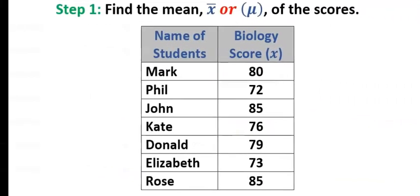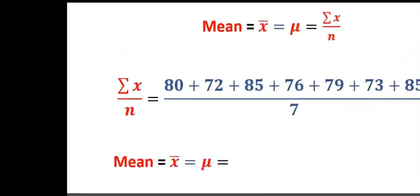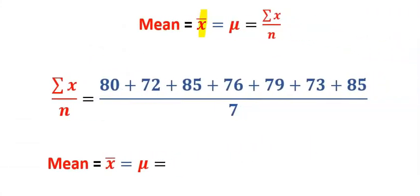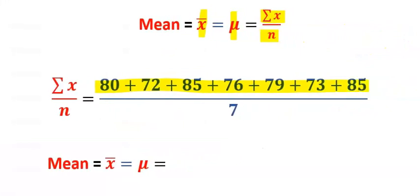Step number one, find the mean of the scores. The mean is denoted by x bar or by the Greek word mu, which simply means summation of all the sample data over the size of the sample. If you sum all the scores on the table, you have 550.